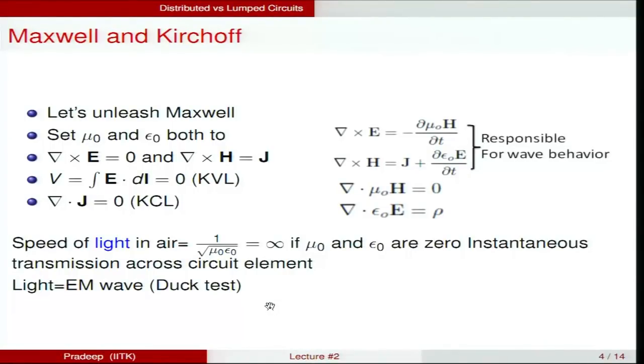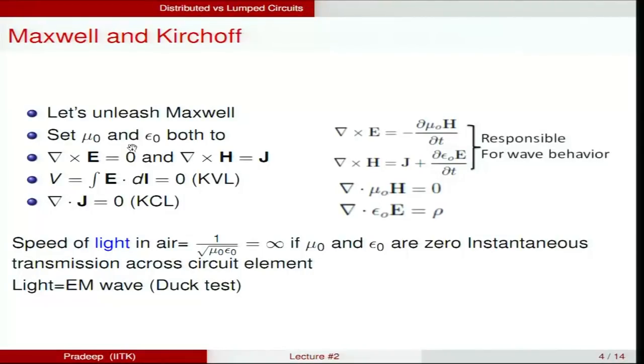The next thing to discuss is the relationship between Maxwell's equations and Kirchhoff's laws. One normally associates Maxwell's equations with electromagnetic fields and Kirchhoff's laws with circuit variables of voltage and current — but we already know that circuit variables are defined in terms of field variables. If you consider Maxwell's equations for curl of E and curl of H, and then set the constants mu_0 and epsilon_0 to zero, the right-hand side time-derivative terms go away and the electric and magnetic fields become decoupled.